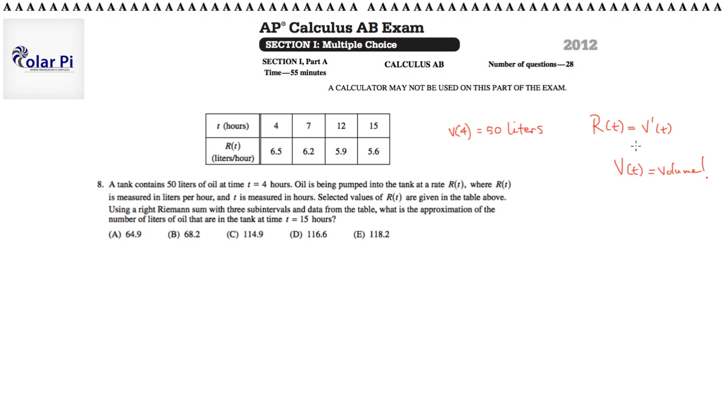If V(t) is volume, then V'(t), the rate of change of volume, is what we're referring to as r(t) here. Oil is being pumped into the tank at a rate r(t), where r(t) is measured in liters per hour and t is measured in hours. Selected values of r(t) are given in the table above.